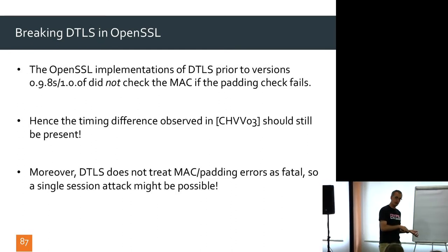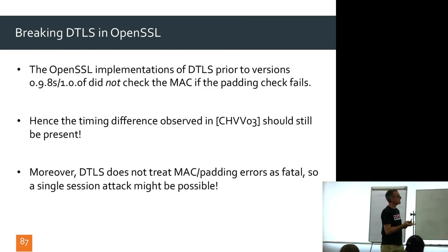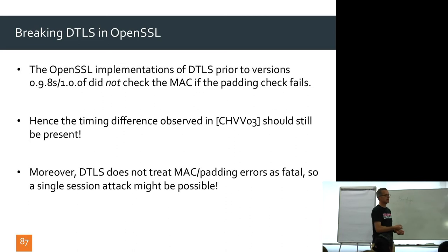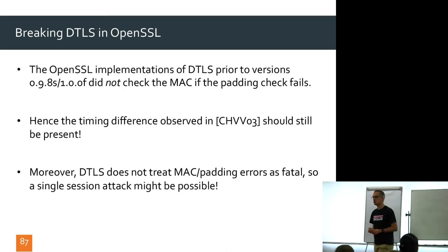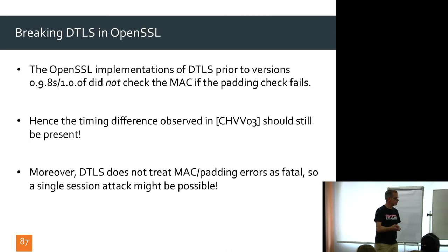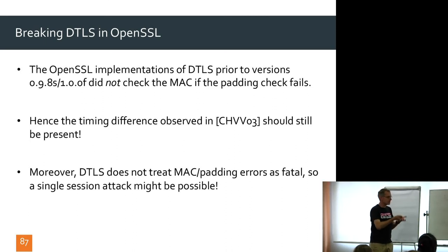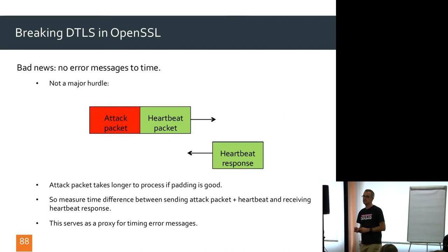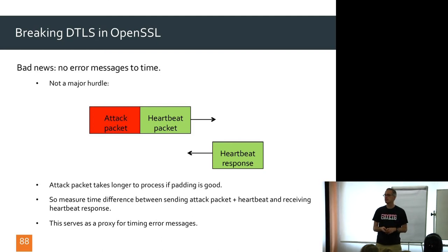The really nice thing is that DTLS doesn't treat decryption failures as fatal, because it runs over UDP — an unreliable protocol where errors might just be noise or dropped packets. So you might be able to do the attack in a single session without waiting for re-handshakes. But there's a problem: in DTLS there are no error messages. When something goes wrong during decryption, nothing is sent back. There's nothing to time.